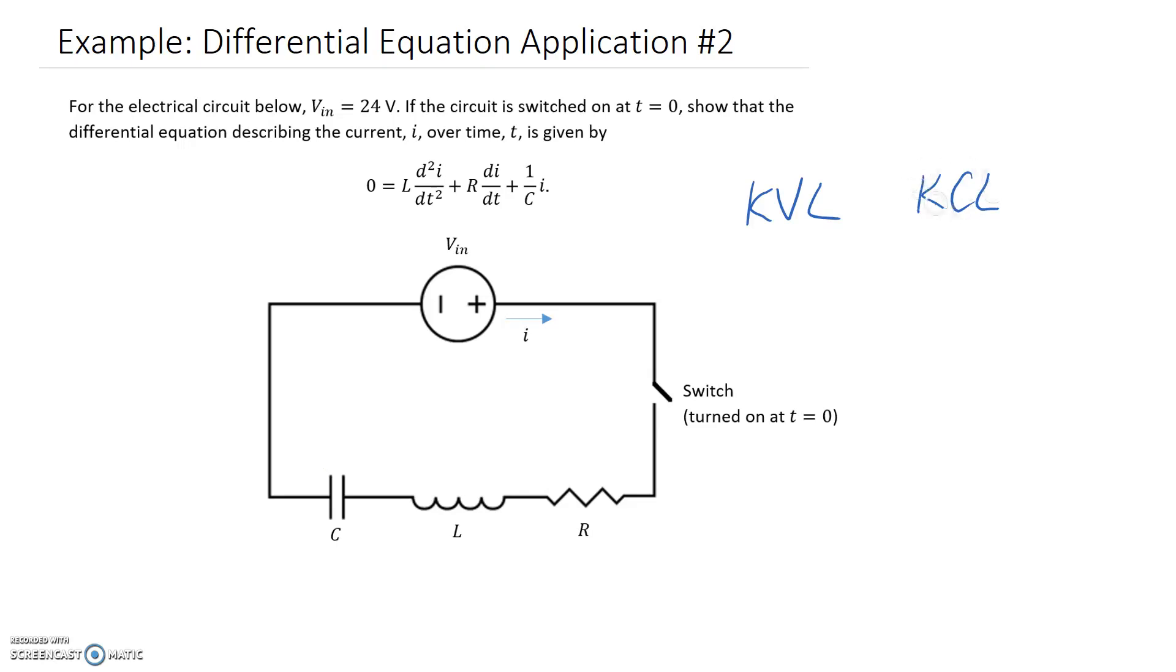The other option we have is KCL, which is similar except it's looking at the currents at a particular node. For this one, what we know is that if we pick a node, the current coming into that node has to equal the current coming out of that node.